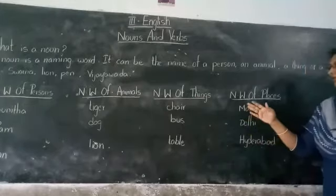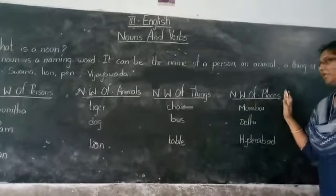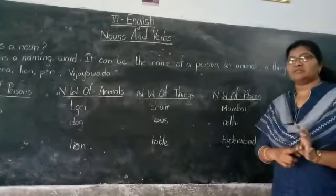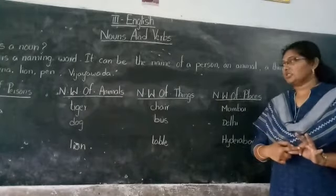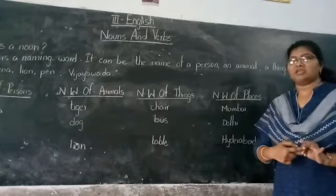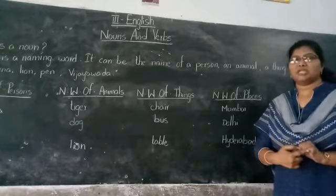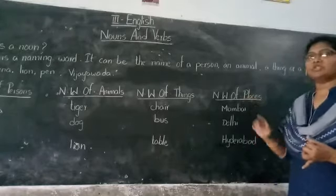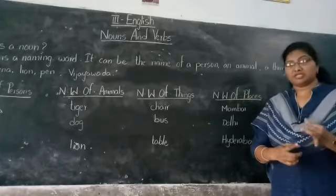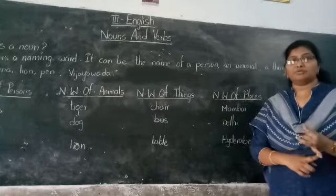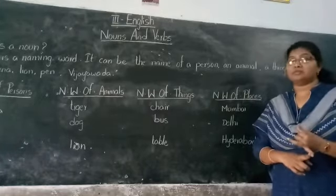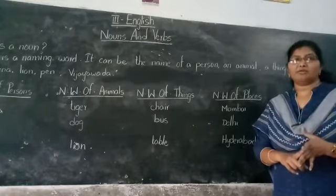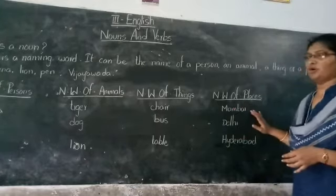Coming to the fourth category: naming word of places. In places, you can include country names, state names, district names, town names, city names, and village names. Also, places names include hospital, school, playground, library, and so on.